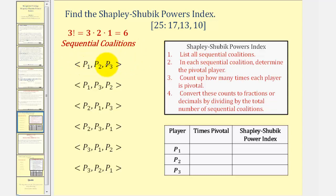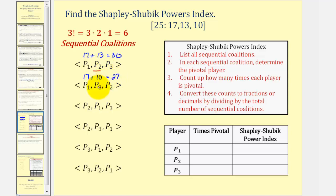For the first coalition, player one has a weight of 17, plus player two with a weight of 13. Once player two joins, the coalition has a weight of 30 which meets quota, so player two is pivotal. For the next order — player one, player three, player two — player one is 17, plus player three at 10 equals 27. Player three turns the coalition from not making quota to making quota, since the quota is 25. So player three is pivotal.